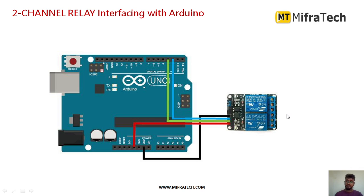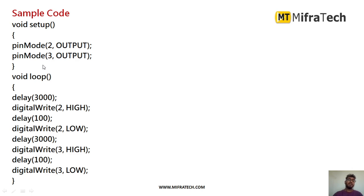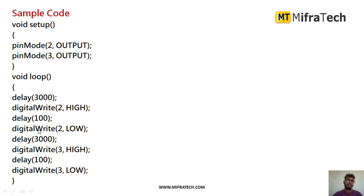Next we will see how to program it. Since relays are used to control output devices, I set them as outputs using pinMode: pin 2 as OUTPUT for relay one, and pin 3 as OUTPUT for relay two. Initially I apply a 3000 millisecond delay. Then I write digitalWrite(2, HIGH) to turn on channel one — relay one. After a 100 millisecond delay, I turn relay one off again.